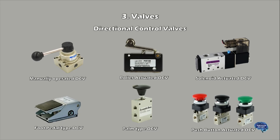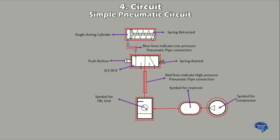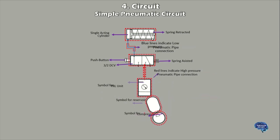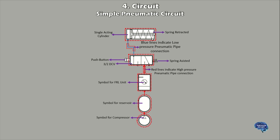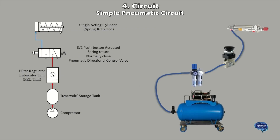Modern control valves may regulate pressure or flow downstream and operate on sophisticated automation systems. A pneumatic circuit is used to move air between components using pneumatic air pipes. It is an interconnected set of components that convert compressed gas into mechanical work, and must include a compressor or compressor-fed air storage tank. Active components include the compressor, air tank, pneumatic pipes, and valves. Passive components include pneumatic cylinders and the FRL unit.